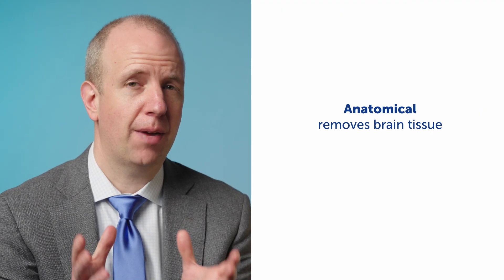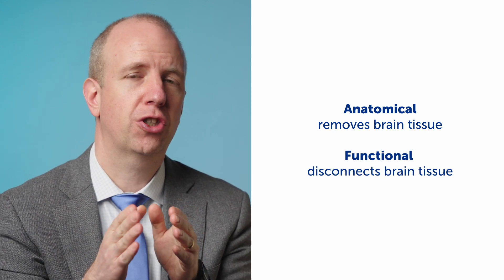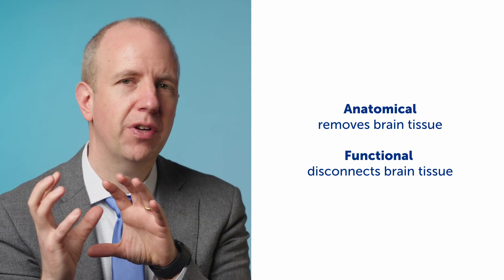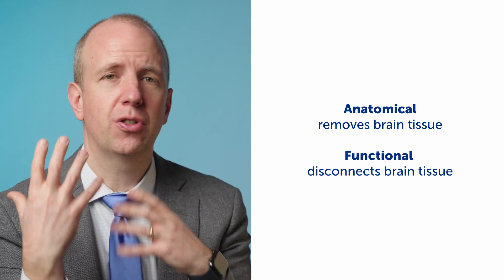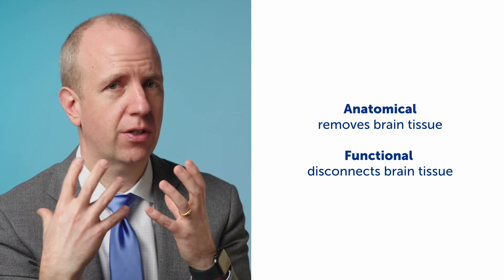One question that confuses people is the difference between a functional and anatomical hemispherectomy. An anatomical hemispherectomy actually refers to physically removing one hemisphere of the brain. Whereas a functional hemispherotomy refers to disconnecting it — rather than physically removing it, cutting the neural connections — effectively eliminating that hemisphere from being able to influence the brain or body in any way, but preserving the blood supply so that the tissue stays there and stays alive. You hear different versions of those terms used together, which creates a lot of confusion, but fundamentally that's the difference.